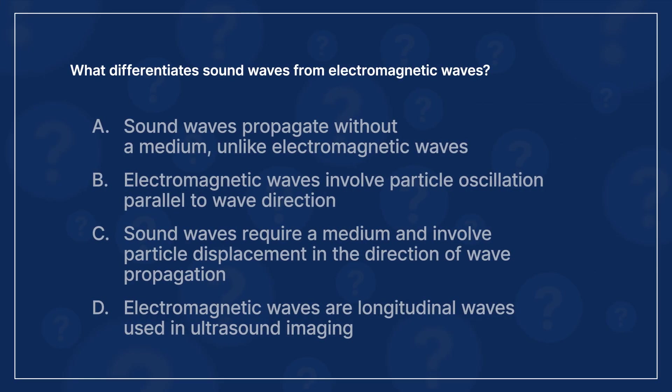Let's check your understanding of sound waves. What differentiates sound waves from electromagnetic waves? A. Sound waves propagate without a medium, unlike electromagnetic waves. B. Electromagnetic waves involve particle oscillation parallel to wave direction while sound waves involve perpendicular oscillation. C. Sound waves require a medium and involve particle displacement in the direction of wave propagation. D. Electromagnetic waves are longitudinal waves used in ultrasound imaging. Take a second to figure it out on your own.